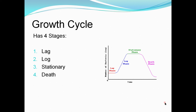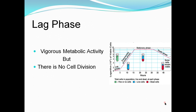The first phase is the lag phase. First, the bacterial growth curve represents the number of live cells in a bacterial population over a period of time. Bacteria require certain conditions for their growth, and these conditions are not the same for all bacteria. The generation time — the time it takes for a population to double — varies between species and depends on how well growth requirements are met.